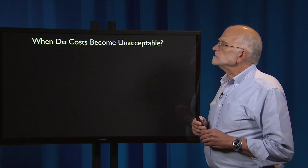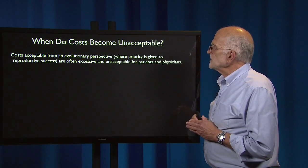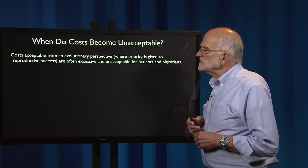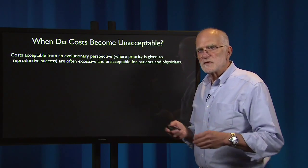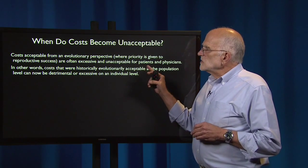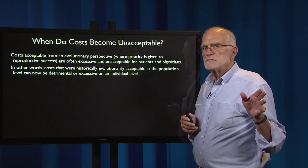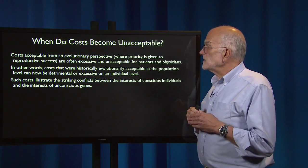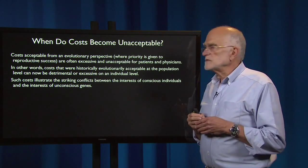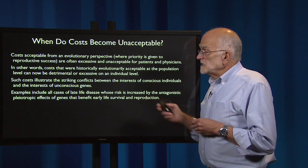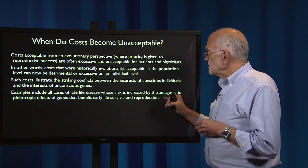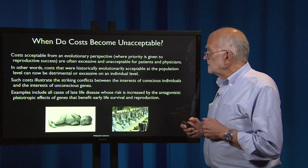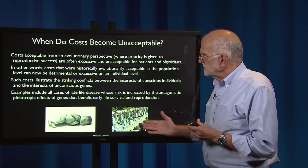When do costs become unacceptable? Costs that are acceptable from an evolutionary perspective — where priority is given to reproductive success — are often excessive and unacceptable to patients and physicians. Another way of saying this is that evolution did not design us to be comfortable and happy; it designed us to get genes into the next generation. Costs that were historically evolutionarily acceptable at the population level can be detrimental or excessive at the individual level. These sorts of costs illustrate the striking conflicts between the interests of conscious individuals and the interests of unconscious genes. Examples include all cases of late-life disease whose risk is increased by the antagonistic pleiotropic effects of genes that benefit early life survival and reproduction.